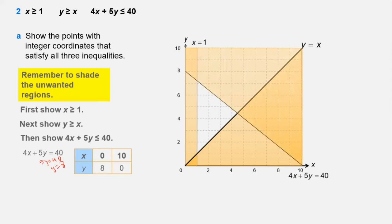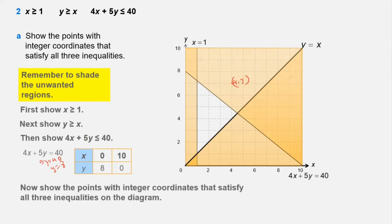The unwanted region for 4x + 5y ≤ 40 is above the line. For example, taking the point (4, 7): substituting gives a value that does not satisfy the inequality, confirming it is in the unwanted region. With all three inequalities plotted and unwanted regions shaded, we show the integer coordinate points satisfying all three inequalities at the corners of the required region.